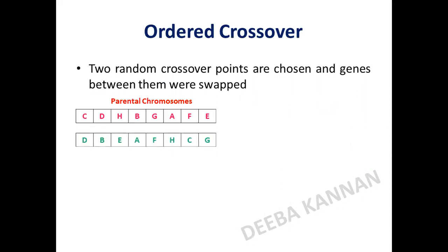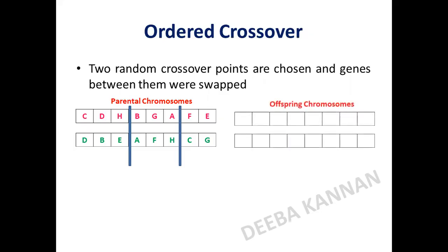Two parental chromosomes are chosen and we randomly choose two crossover points somewhere in the chromosome. We cut it at two crossover points and the genes between these two points are swapped. Parent one's chromosome is copied to offspring two, and parent two's chromosome is copied to offspring one.